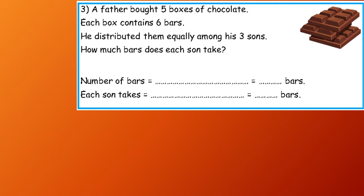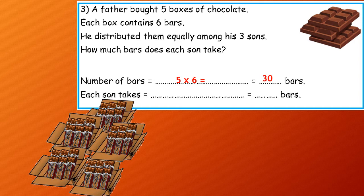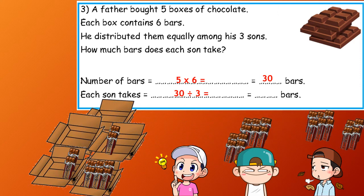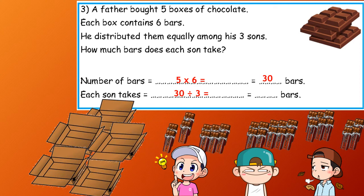So, first step, number of bars: five boxes by six chocolate bars for each box. So 5 by 6 equals 30 bars. In five boxes, there are 30 bars. Each son would take, he has three sons. So when we distribute the chocolate, 30 divided by 3 equals 10 bars for each son.